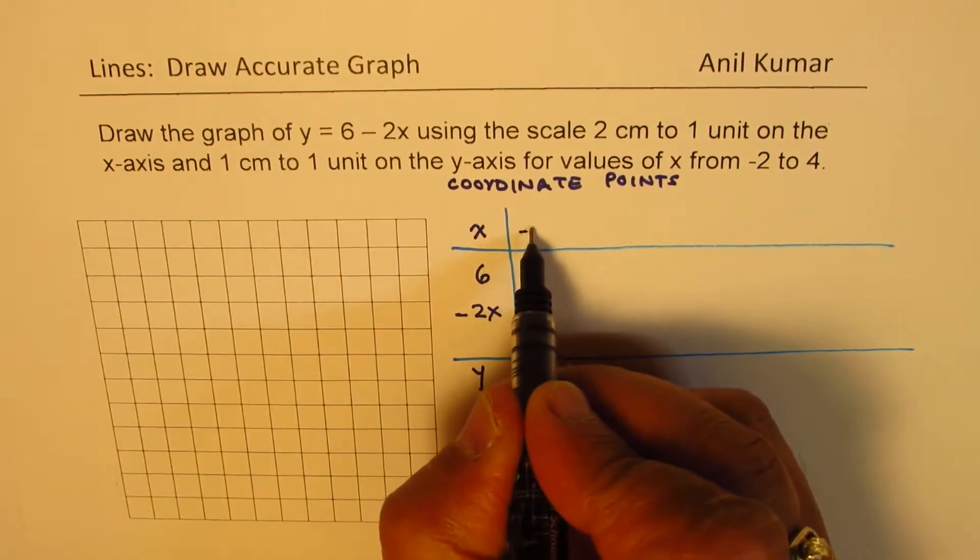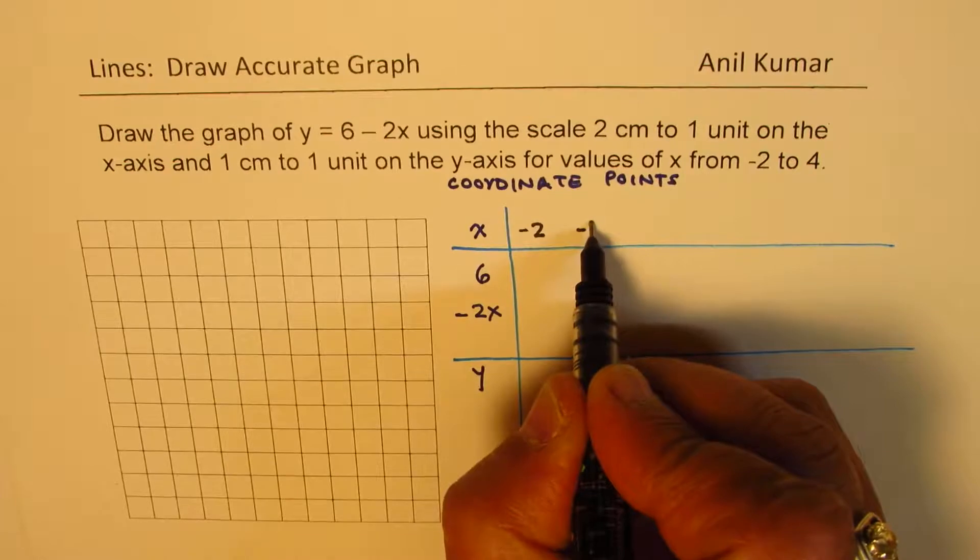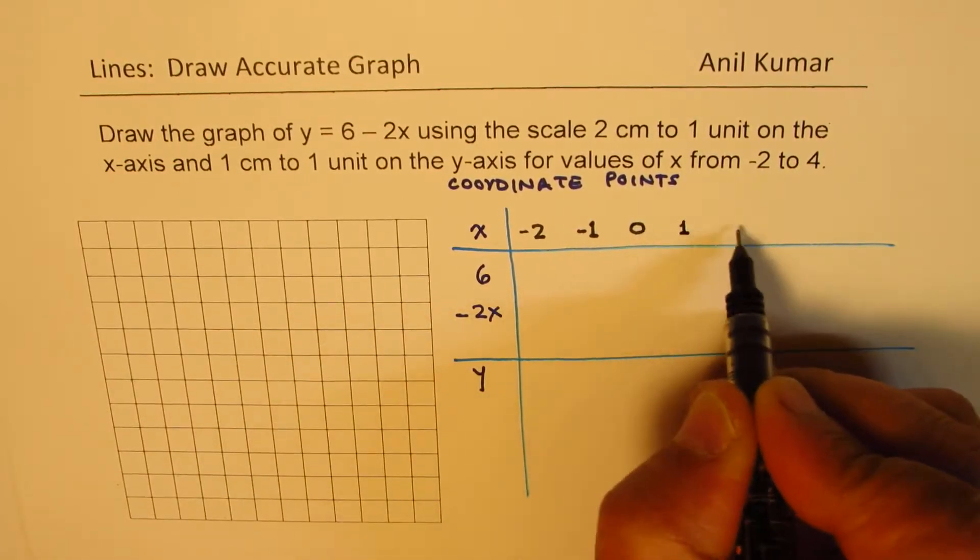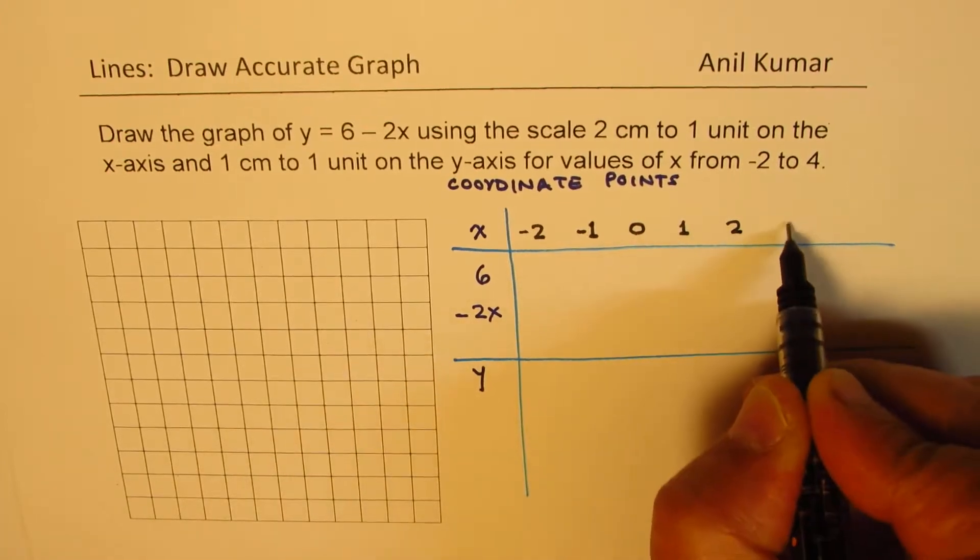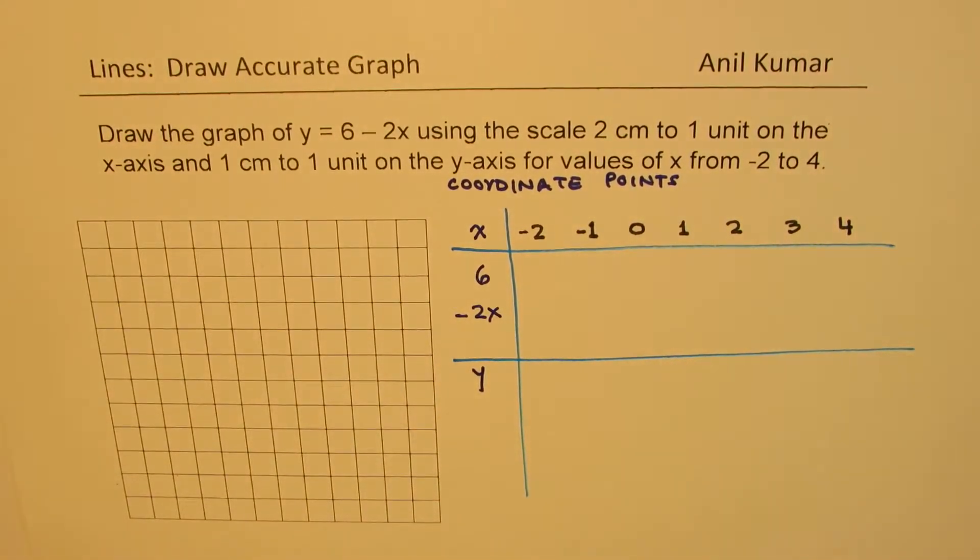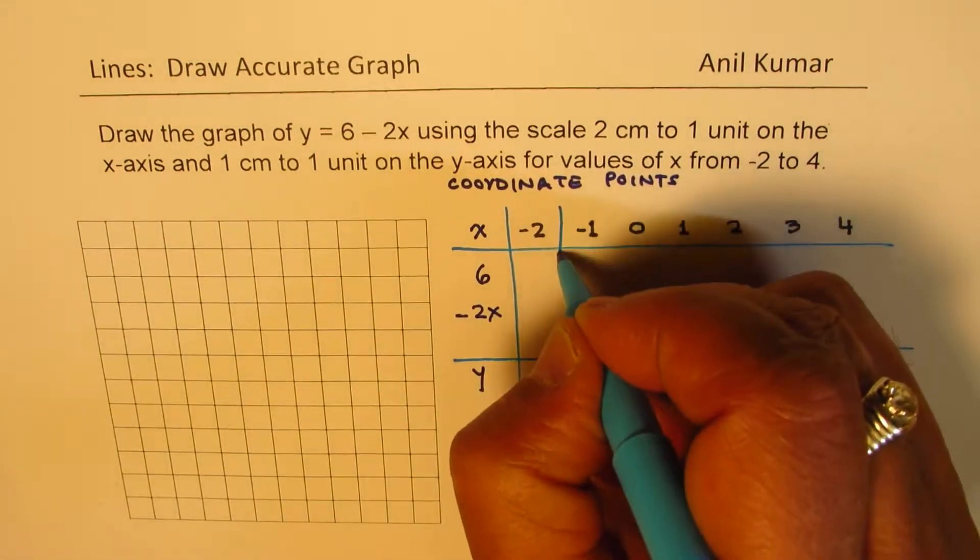As far as x is concerned, we are taking values from minus 2 to 4. So let me write minus 2, then we have minus 1 and then we have 0, 1, 2, 3 and 4. So those are the values which has to be calculated. So let me draw these vertical lines.